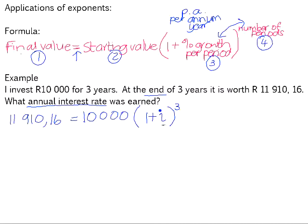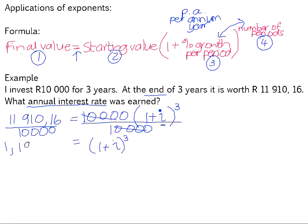So the job here is we want to get the i, the interest, on its own, on one side of the equation. So we need to start peeling off the layers. The first thing that we're going to do is divide both sides by 10,000. So when we divide by 10,000, that leaves us with 1 plus i to the power of 3.